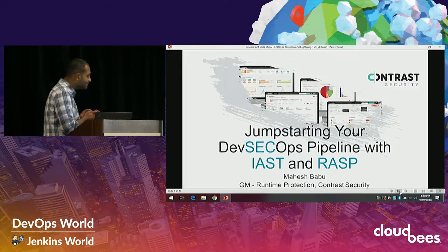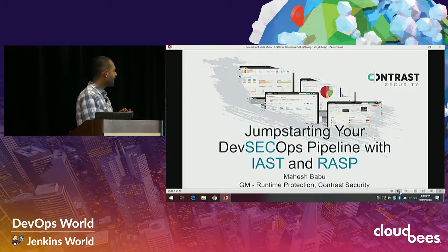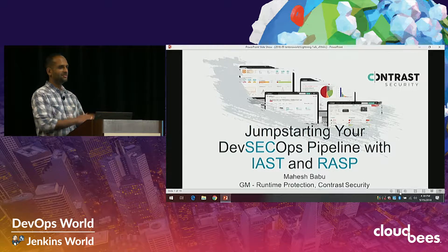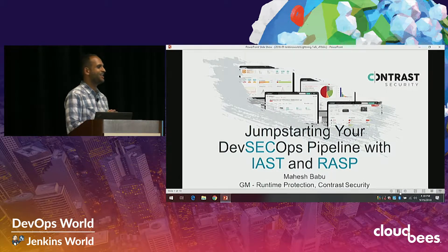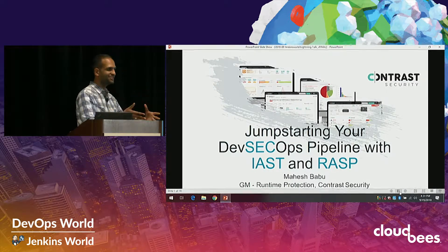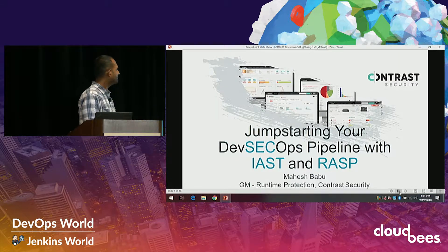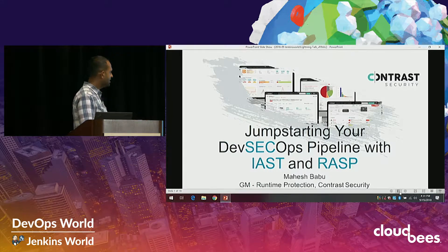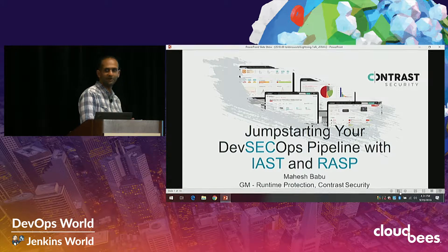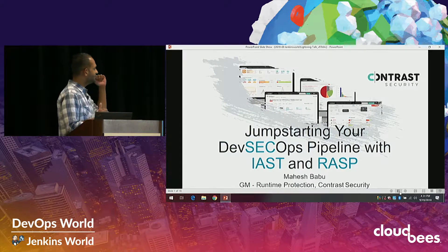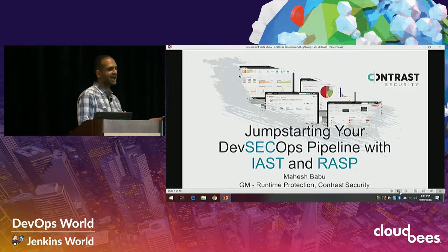This is talk number one: jump-starting your DevSecOps pipeline with IAST and RASP. Gartner is going to be so happy with me because those are terms they coined. Because we have 10 minutes, I'm going to bottom-line up front — you're going to learn three things today: one, what is IAST; two, what is RASP; three, where can you find it for free and start using it today.